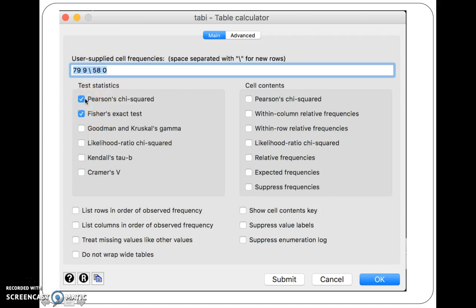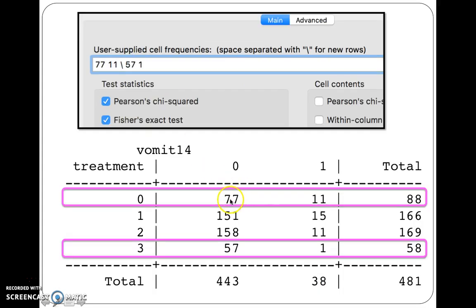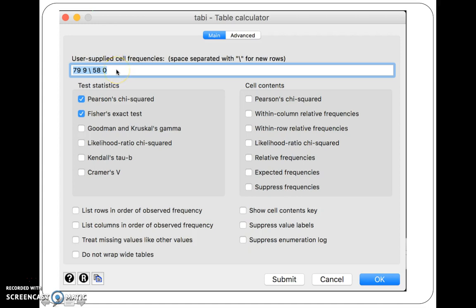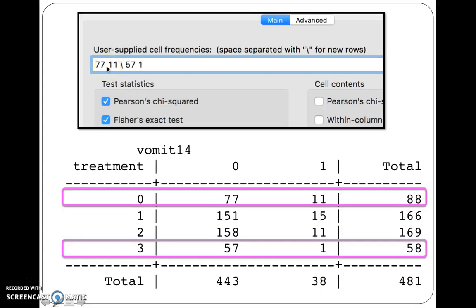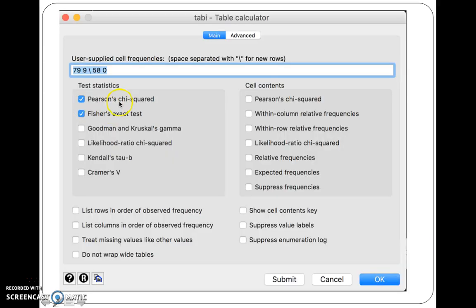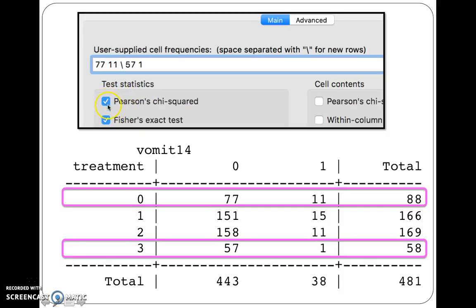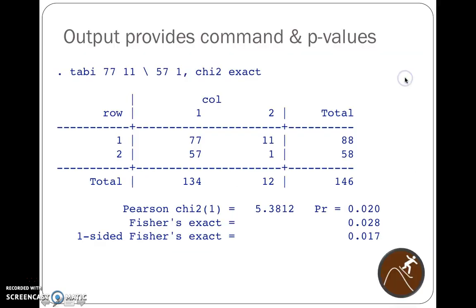And then we can click on all these different things that we want. We'll just do the Pearson chi-square test, even though Fisher's exact test would be best because there's a 1 in this example. But those may not be the numbers you're interested in. So we're interested in comparing the 77 and 11 versus the 57 and 1. So we're going to put these numbers in: 77 space 11 backslash 57 space 1. We click those two buttons from the big box, and then it gives us this.